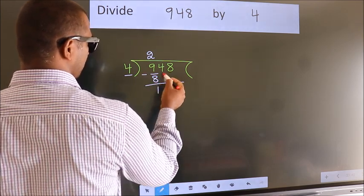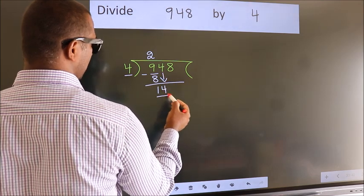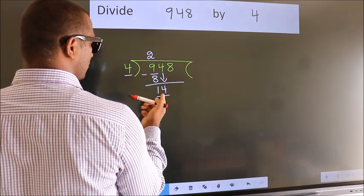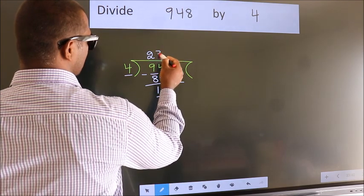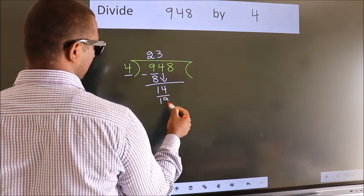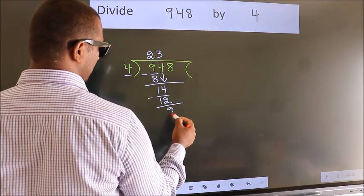After this, bring down the beside number. So 4 down, so 14. A number close to 14 in 4 table is 4 times 3 is 12. Now we subtract. We get 2.